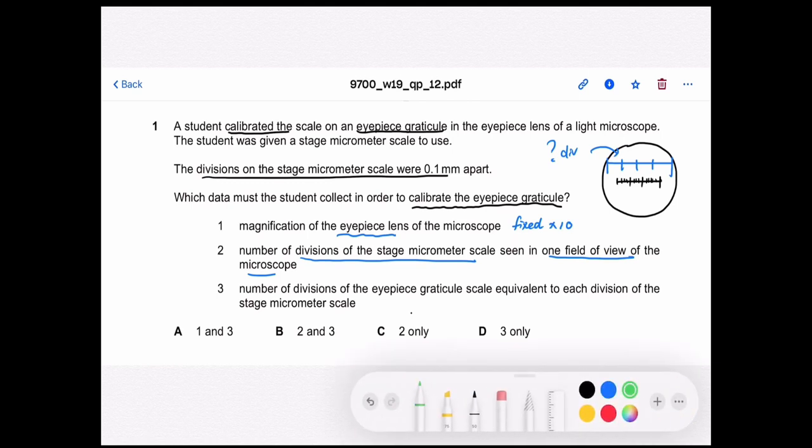I just need to calibrate by matching the number of divisions on the stage with the eyepiece. The total number of divisions doesn't really matter. So, number two is out.